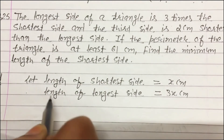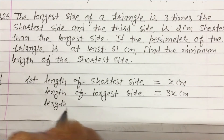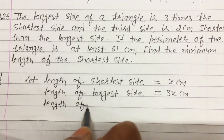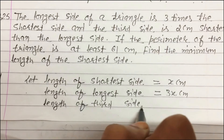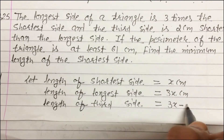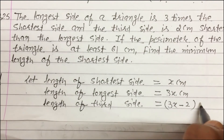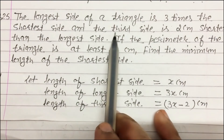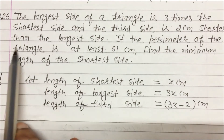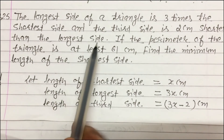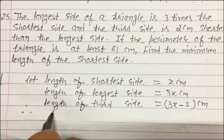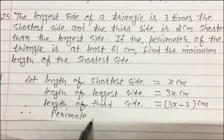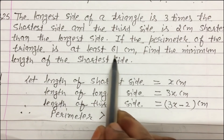Let the length of the shortest side be x. Then the longest side is 3x, and the length of the third side is 3x − 2 cm, since the third side is 2 cm shorter than the longest side. It is also given that the perimeter is at least 61 cm.